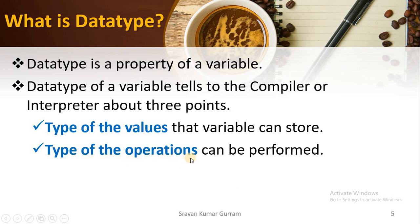Second point: the type of operations that can be performed. Based on the data type declared, the type of operations will be decided. Suppose I declared two integer type variables — I can perform addition, multiplication, division operations because those are numbers. If I declare a variable as string type — which stores a name — can we perform multiplication operations on names? No. That is the reason you cannot perform arithmetic operations on a string type variable. Based on the data type of the variables, the types of operations that can be performed will be decided.